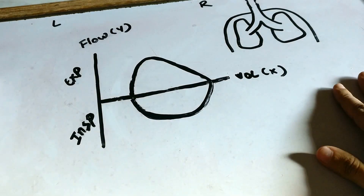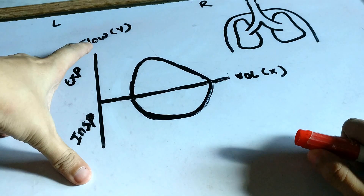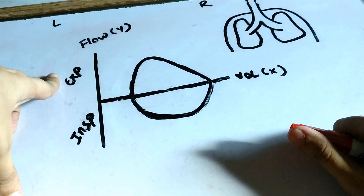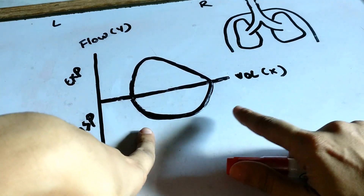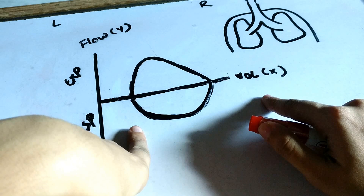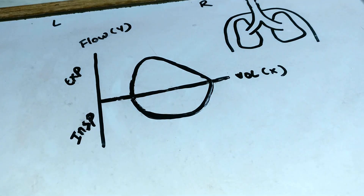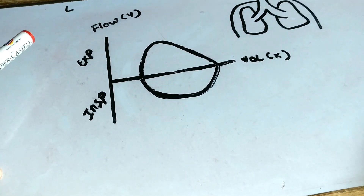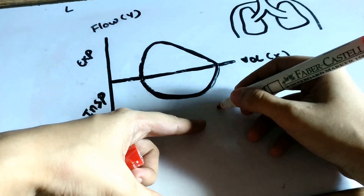Hello, in this video I'll be talking about the flow volume loops. The flow volume loop basically plots the air flow on the y-axis during expiration and inspiration against the lung volume on the x-axis. I'll be sharing mnemonics and explaining some of the concepts to you. But before I get started, let me tell you about something that used to confuse me earlier.